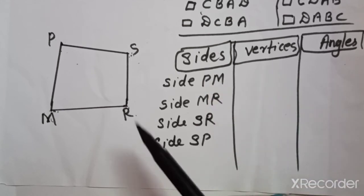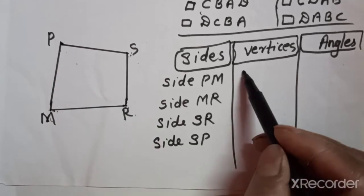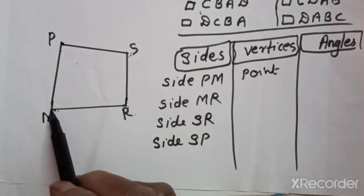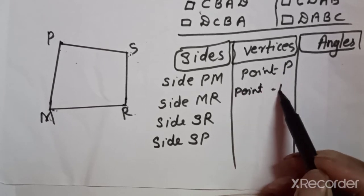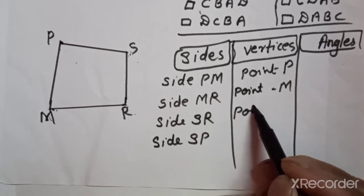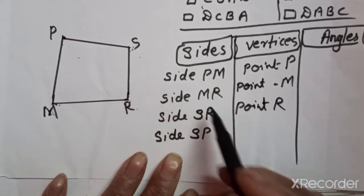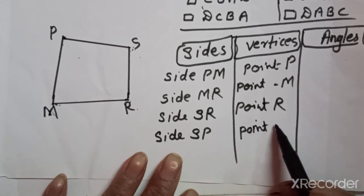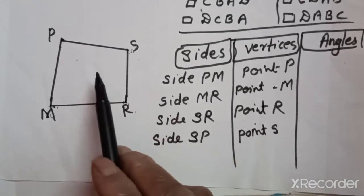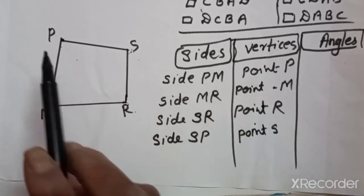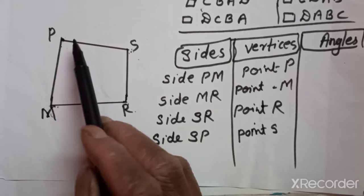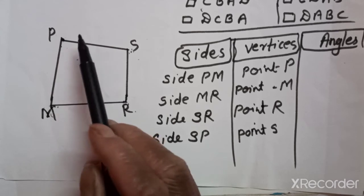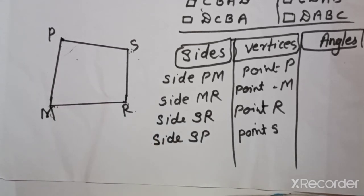Now let us identify the vertices. A vertex is just a point - the corner point. So the vertices are: point P (first vertex), point M (second vertex), point R (third vertex), and point S (fourth vertex). These four points are the vertices of this quadrilateral. A vertex is a single-letter name, just a point. Note that when we say angle P, that is not just the point - it refers to the entire angular region at that corner.